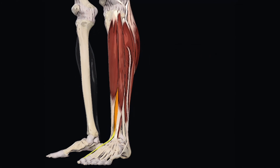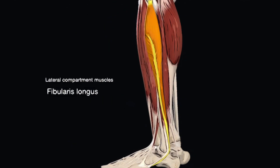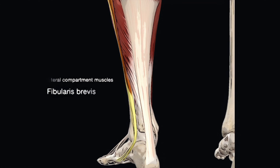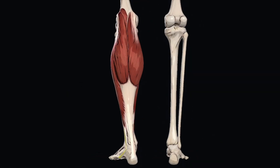Next, the muscles of the lateral compartment. The fibularis longus muscle plantarflexes the talocrural joint and everts the subtalar joint, and these actions are shared with the fibularis brevis muscle.